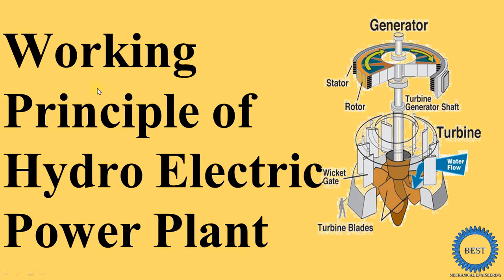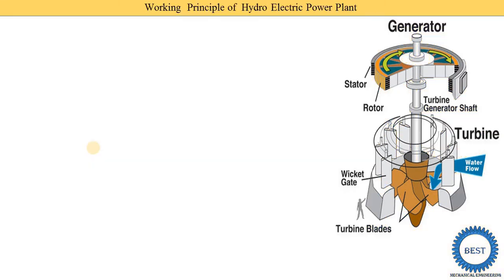In this video, I explain the working principles of a hydroelectric power plant. What is the meaning of hydro? Hydro means water. By using the water, we produce the electricity. It is called the hydroelectric power plant.